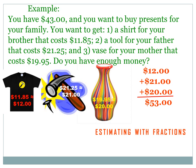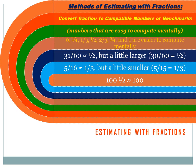Do you think you've got enough? Well, let's estimate. The shirt costs $11.85 — let's round that to $12 because $12 is easier to add. The tool costs $21.25 — let's round that to $21. And the vase costs $19.95 — that's nearly $20, so let's round it to $20. So now we've got $12 plus $21 plus $20, which is a lot easier to add. That's $53. Do you have enough money?